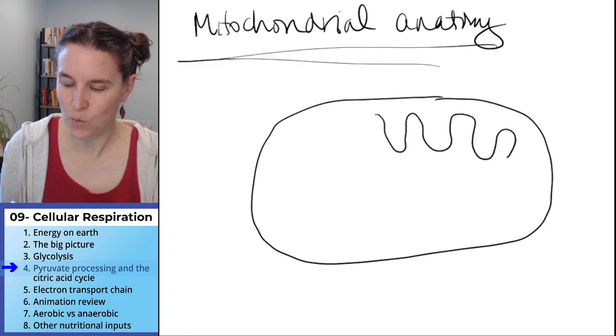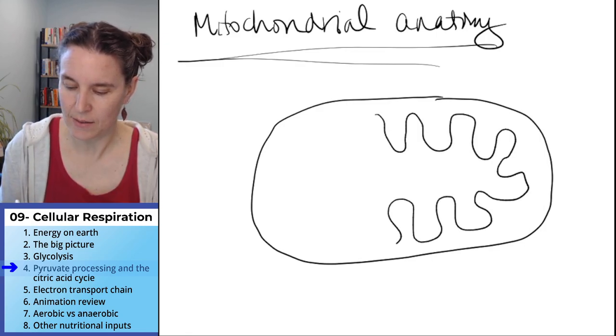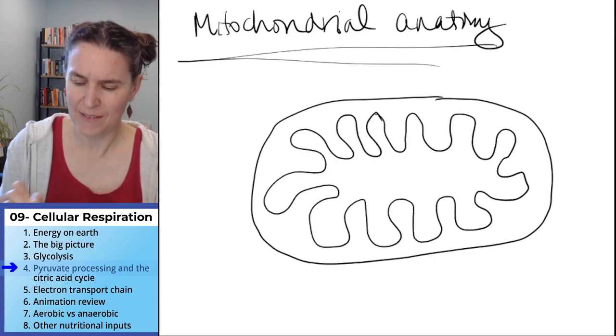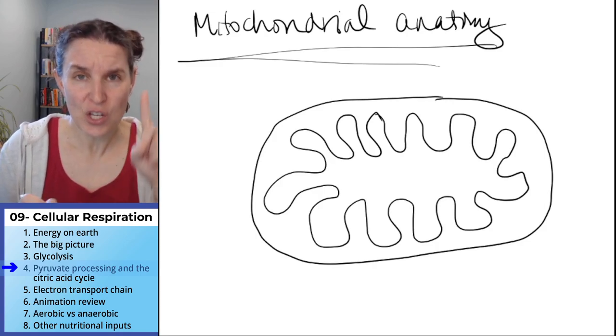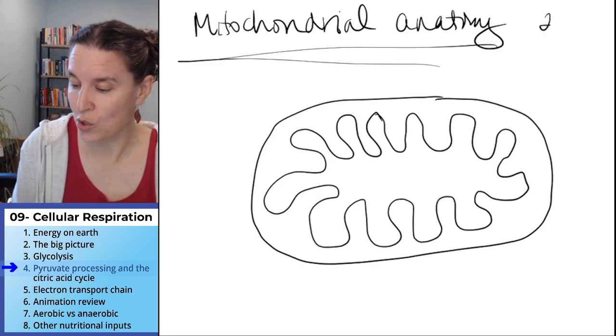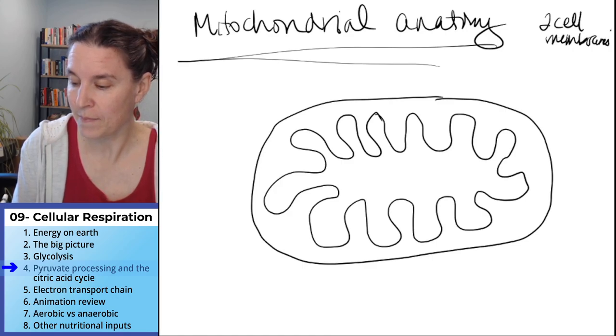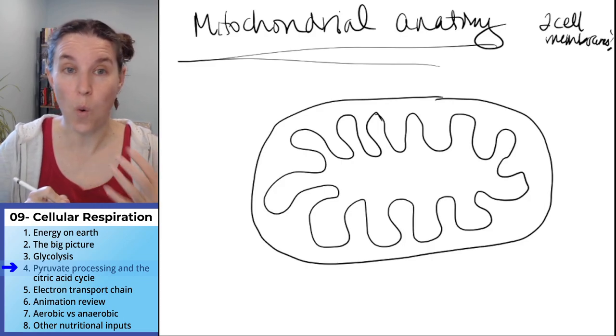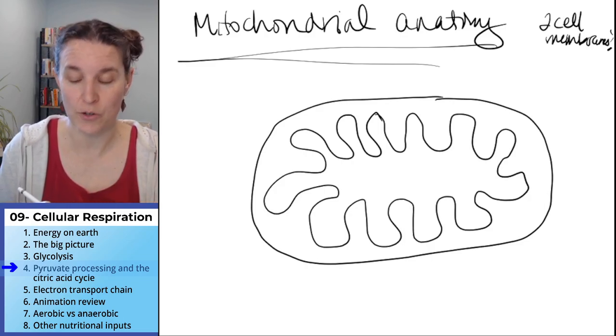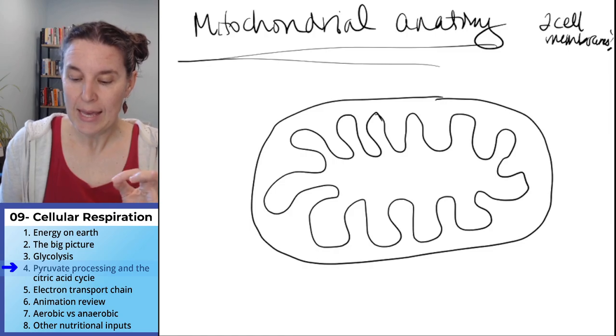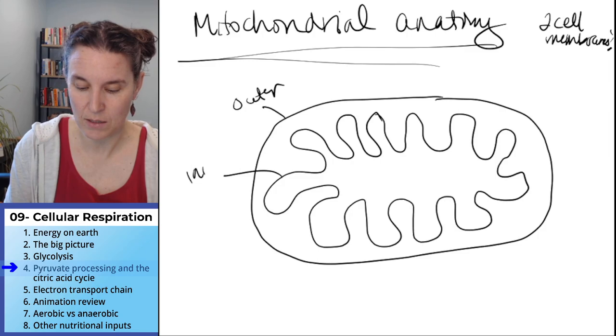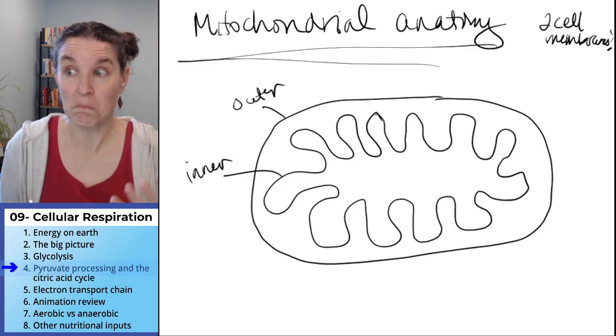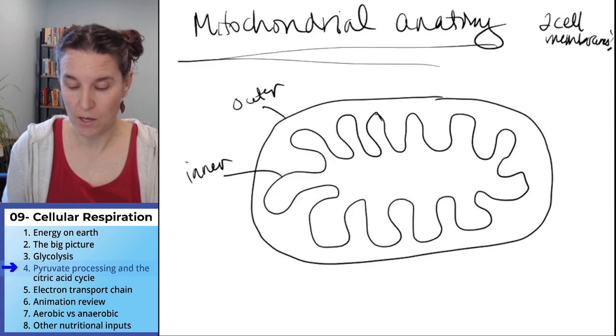And they have this wildly folded inner cell membrane. So two things. They have two cell membranes. This is a really unique quality of the mitochondrion. This is the outer cell membrane. And this is the inner cell membrane of the mitochondrion.